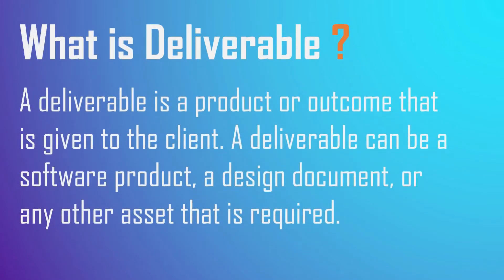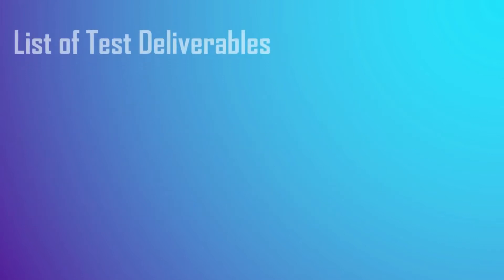The deliverable can be a software product, a design document, or any other desired asset. Test deliverables are artifacts — things that are produced by people involved in the process and delivered to stakeholders. Some deliverables are provided before the test phase, some during the test phase, and the rest after the test cycle.